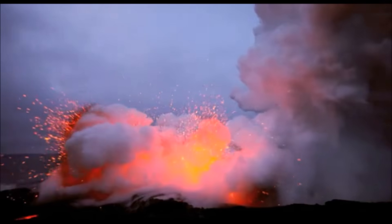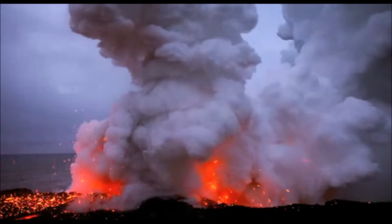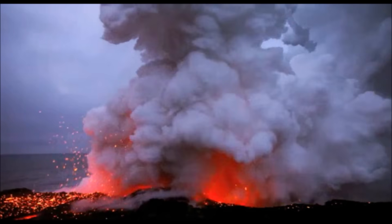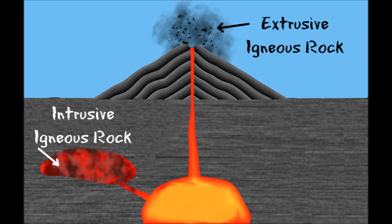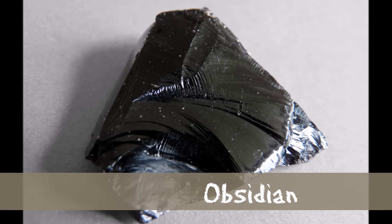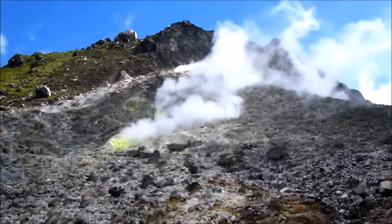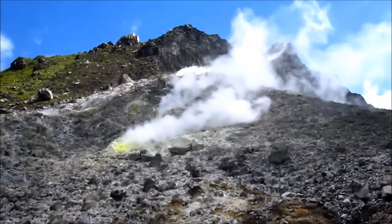Other times, lava cools when it comes to the surface in a volcanic eruption. This forms extrusive igneous rock. Some examples of extrusive igneous rock are tuff, obsidian, and pumice. Igneous rocks make up about 95% of the earth's crust.